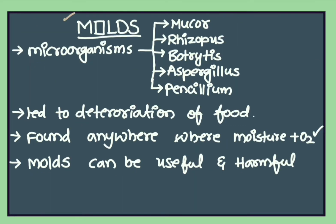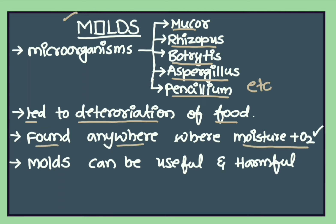Molds lead to deterioration of food. Molds are a type of fungus. Examples are Mucor, Rhizopus, Botrytis, Aspergillus, Penicillium, and etc. They are found anywhere where moisture and oxygen are present.